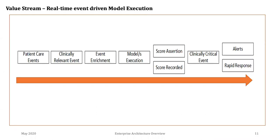If you think about an organization and its capabilities — what the organization can do — and you stitch those capabilities one after the other, what you get is called a value stream. A value stream is a revenue-generating stream.